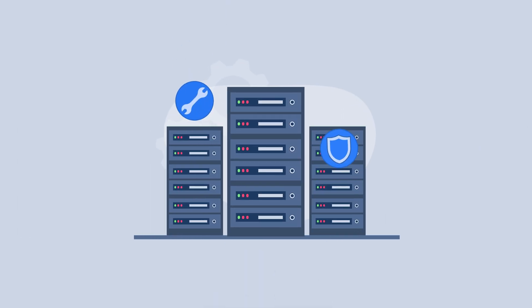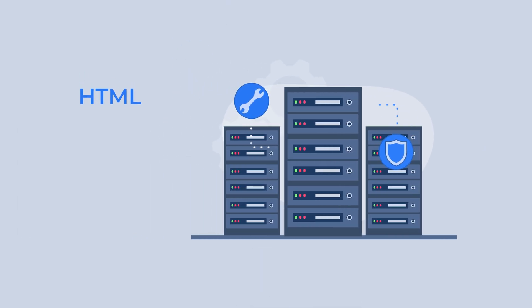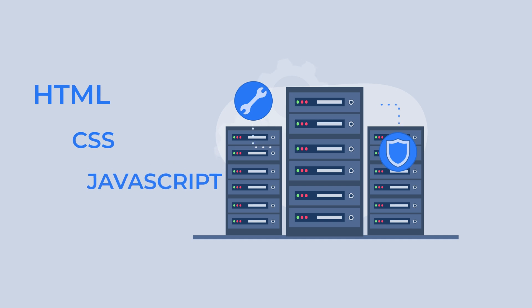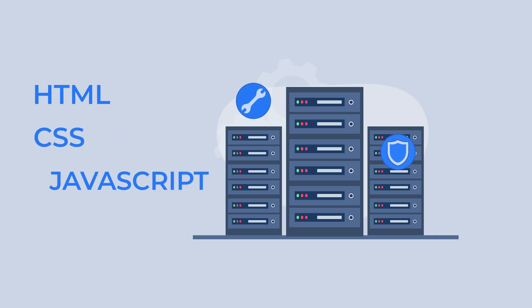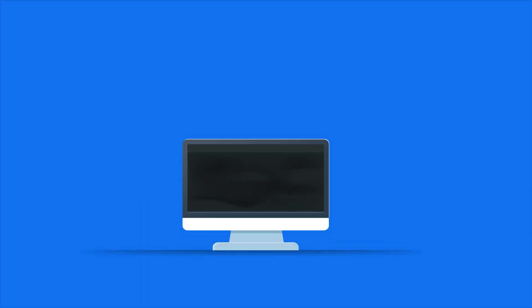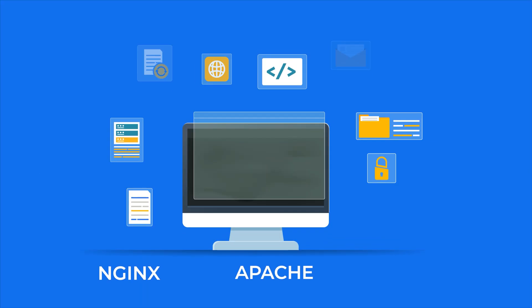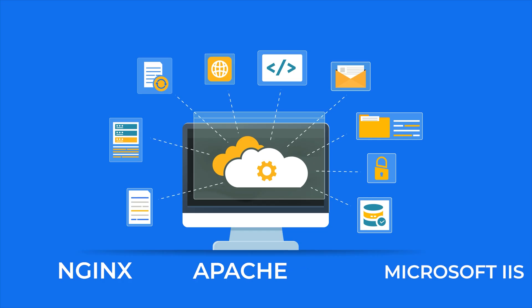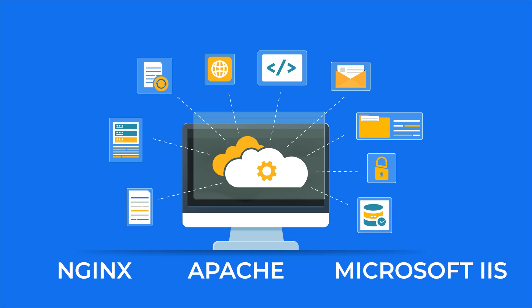Let's get into the five most common types of servers you might interact with every day. Starting off with number one, web servers. Web servers deliver websites to your browser. When you type a URL, you're asking a web server to send you HTML, CSS, and JavaScript files that create the webpage you see. Popular web servers include Nginx, Apache, and Microsoft Internet Information Services, or IIS.